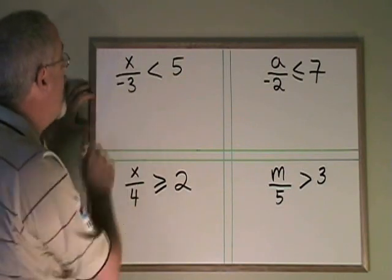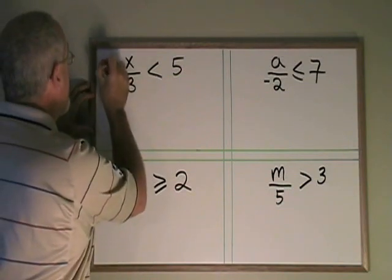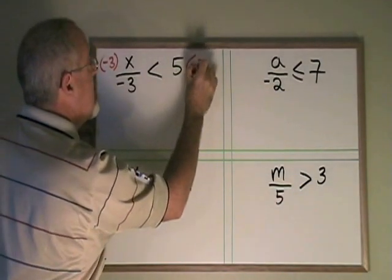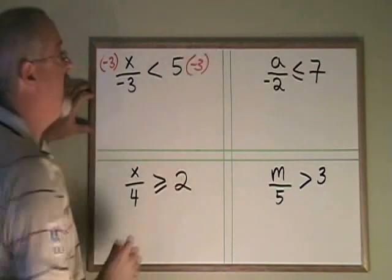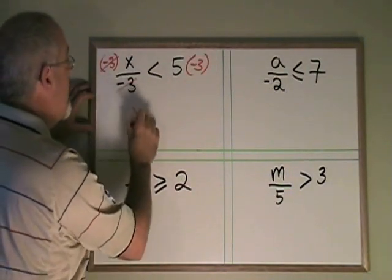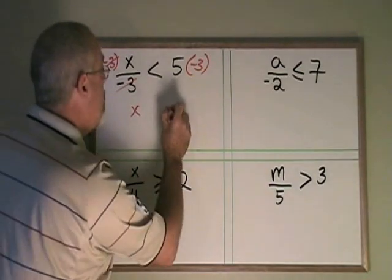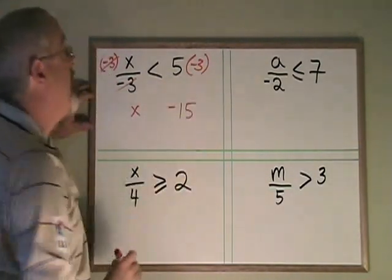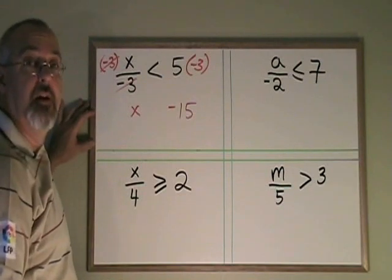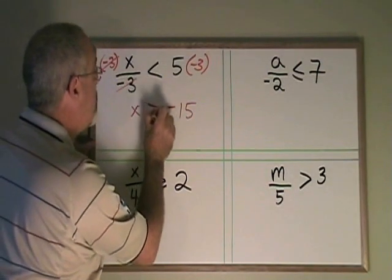Here, our variables are being divided by other numbers. My x is being divided by a negative 3. That means I have to multiply both sides of the inequality by negative 3. These cancel. My x is isolated. 5 times negative 3 is negative 15. And because I multiplied both sides of the inequality by a negative number, I have to turn my symbol backwards.